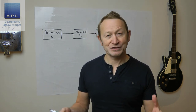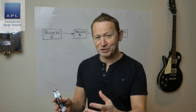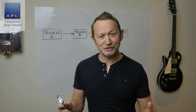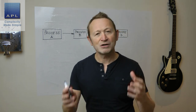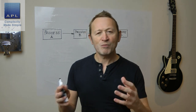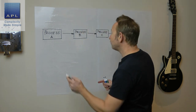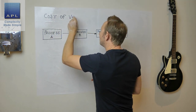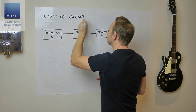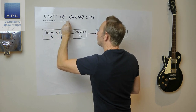Welcome to Complexity Made Simple. My name is Paul Allen and the subject of today's video is the cost of poor quality — this is a continuation of a video I recorded a couple of days ago. If you haven't seen it, go back and look at my channel. We're going to call this one the cost of variability, because that is what Six Sigma and total quality want you to get rid of.